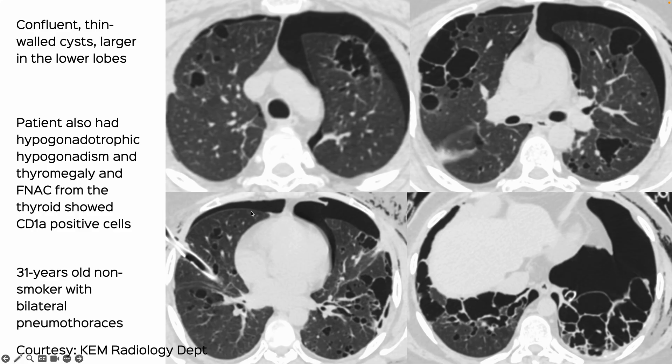This was a patient seen during one of the KEM meetings who had systemic histiocytosis. You can see these irregular, bizarre-shaped cysts but the intervening lungs are normal.